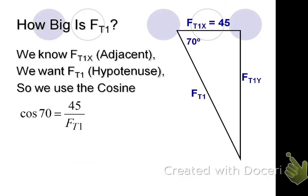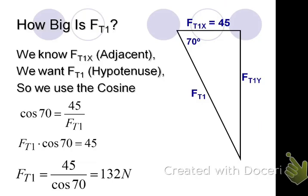FT1 is in the denominator. So I can't do anything until I get it out. How do I get FT1 out of the denominator? Multiply by FT1. So now I have FT1 times cosine 70 equals 45. Then I divide by cosine 70. 45 divided by cosine 70. Round to three sig figs. Put a unit on there. 132 newtons. That is the tension.